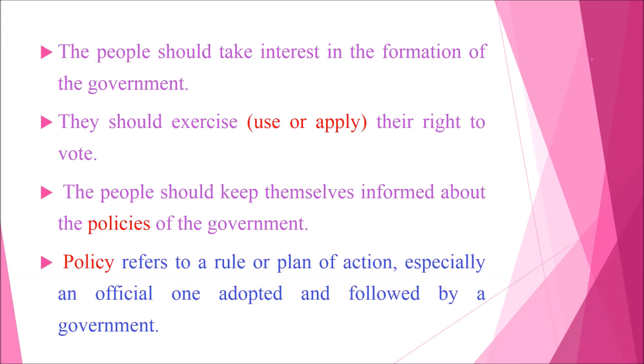The second point is that they should be disciplined and obey the law. Law means a set of rules. The people should take interest in the formation of the government. They should exercise — exercise means use or apply — their right to vote. The people should keep themselves informed about the policies of the government. Policy refers to a rule or plan of action, especially an official one adopted and followed by a government.